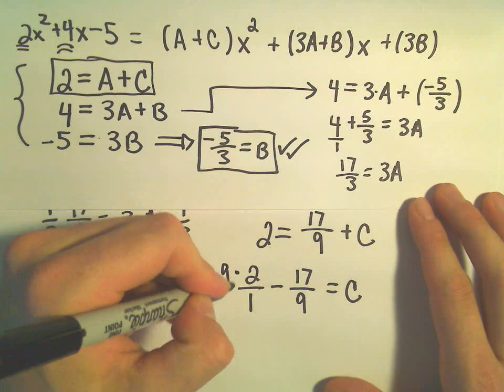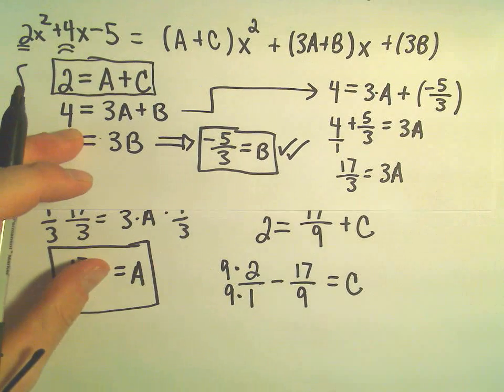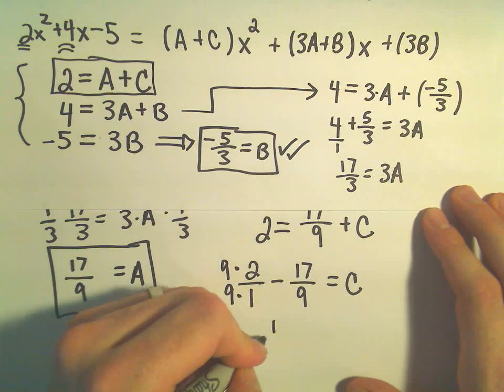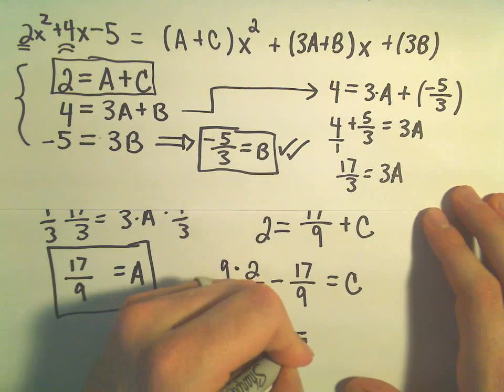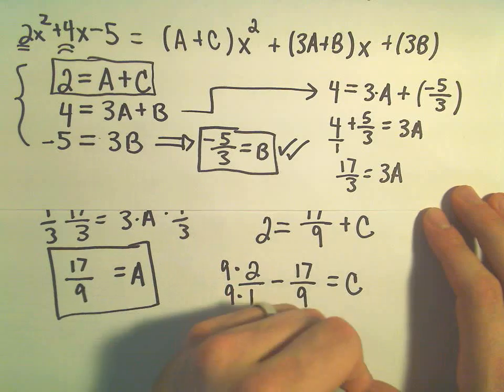I'm going to multiply top and bottom of my first fraction by 9. It looks like we would get 18 minus 17 or 1 ninth as our value for C. So alright,